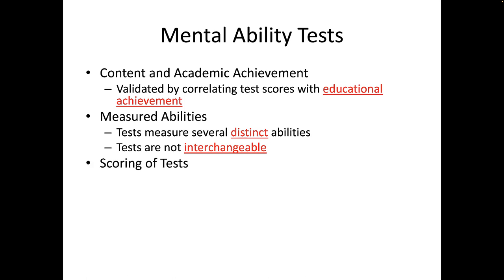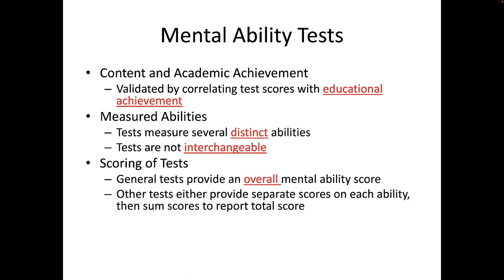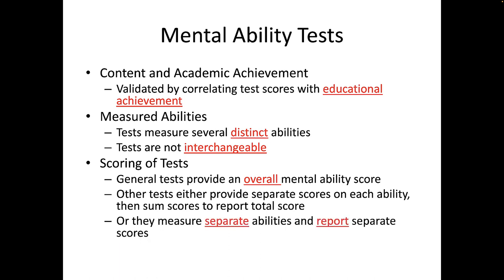Third, a variety of scores can be obtained from these tests. A general mental ability test will measure several various mental abilities and provide an overall score purported to represent overall general mental ability. Or, a test may be designed to provide separate scores on each ability, which are then summed to report a total score. Or, a test may measure separate abilities and only report separate scores for those measured abilities instead of providing an overall score for general mental ability.